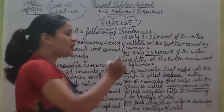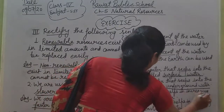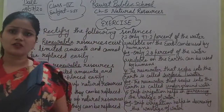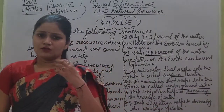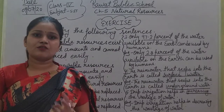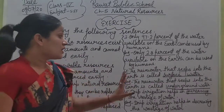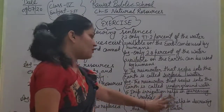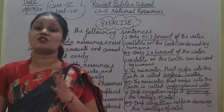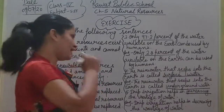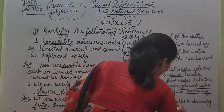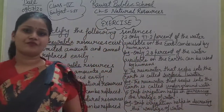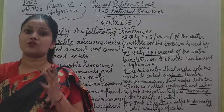Next, sentence number five: 'Drip irrigation helps in increasing the wastage of water.' Drip irrigation water ke wastage ko increase karti hai — no, it's wrong. Drip irrigation helps in decreasing the wastage of water. Water ke wastage ko decrease karti hai drip irrigation. So we write: 'Drip irrigation helps in decreasing the wastage of water.'